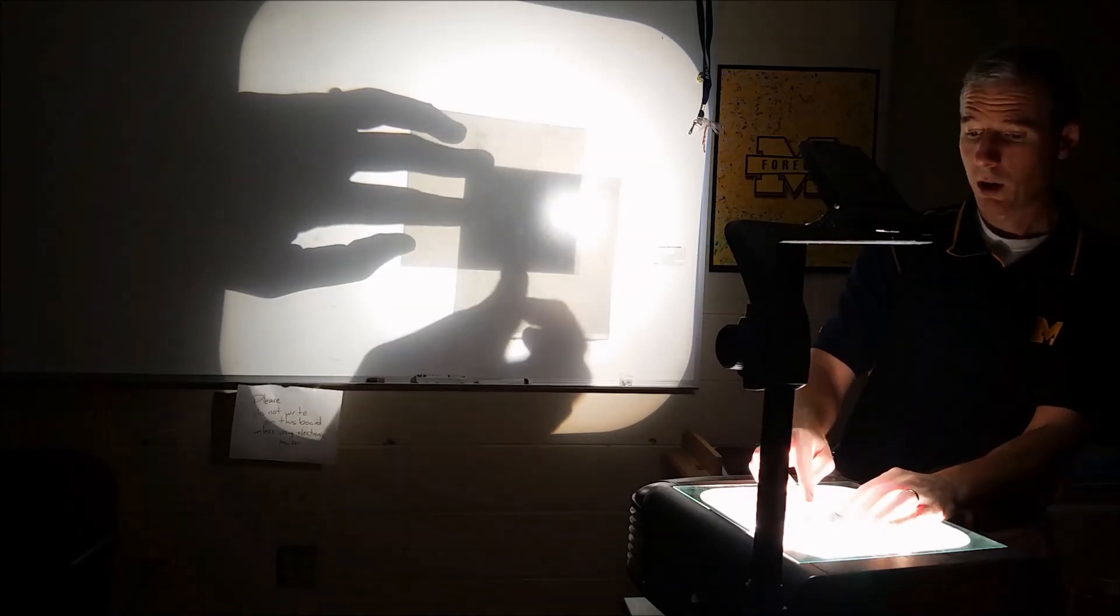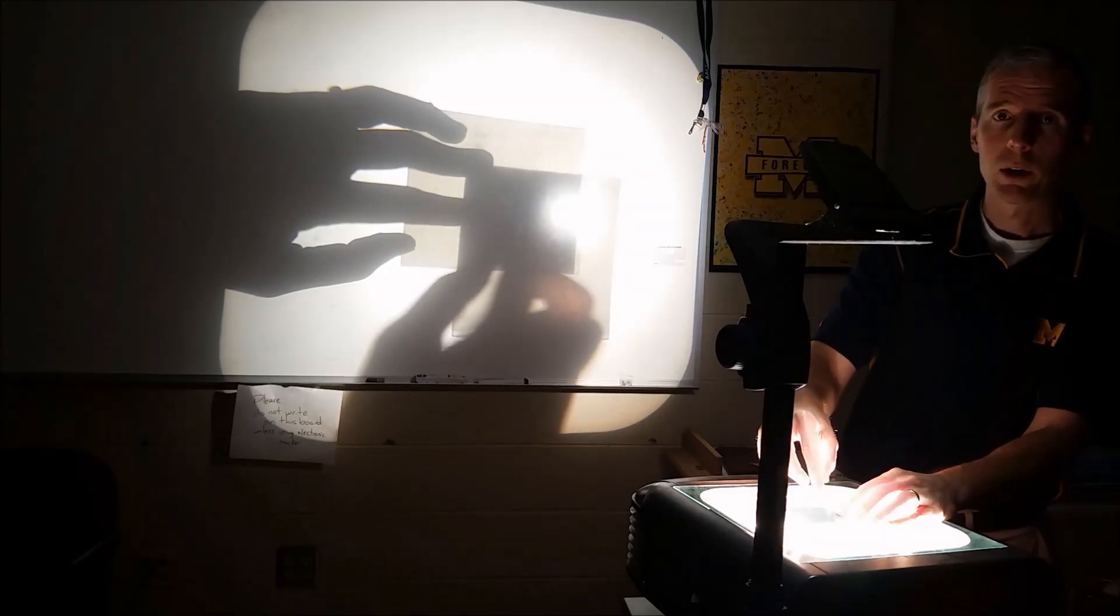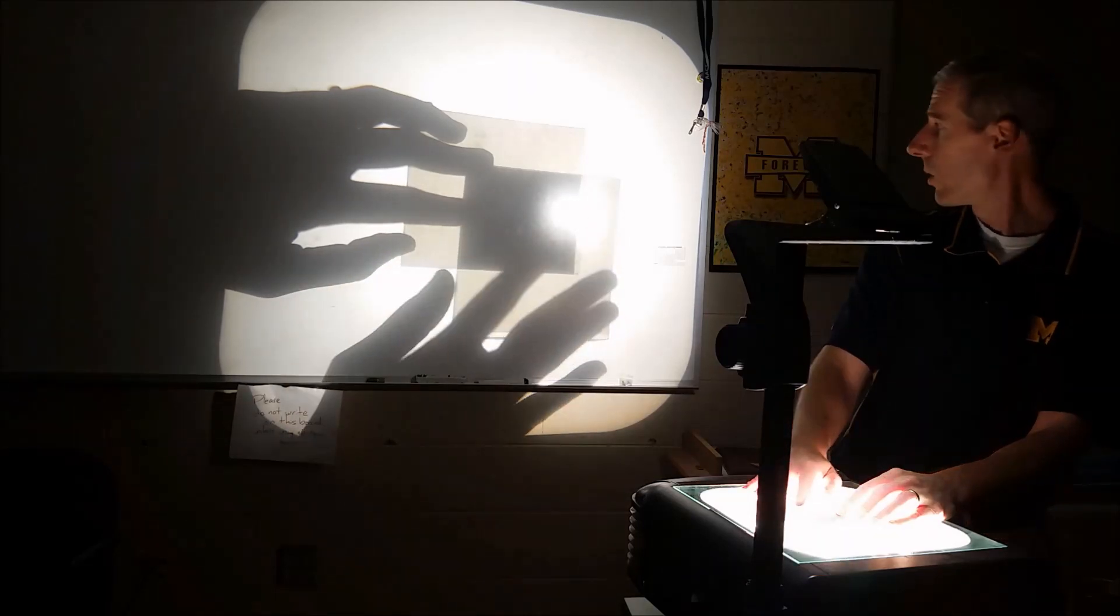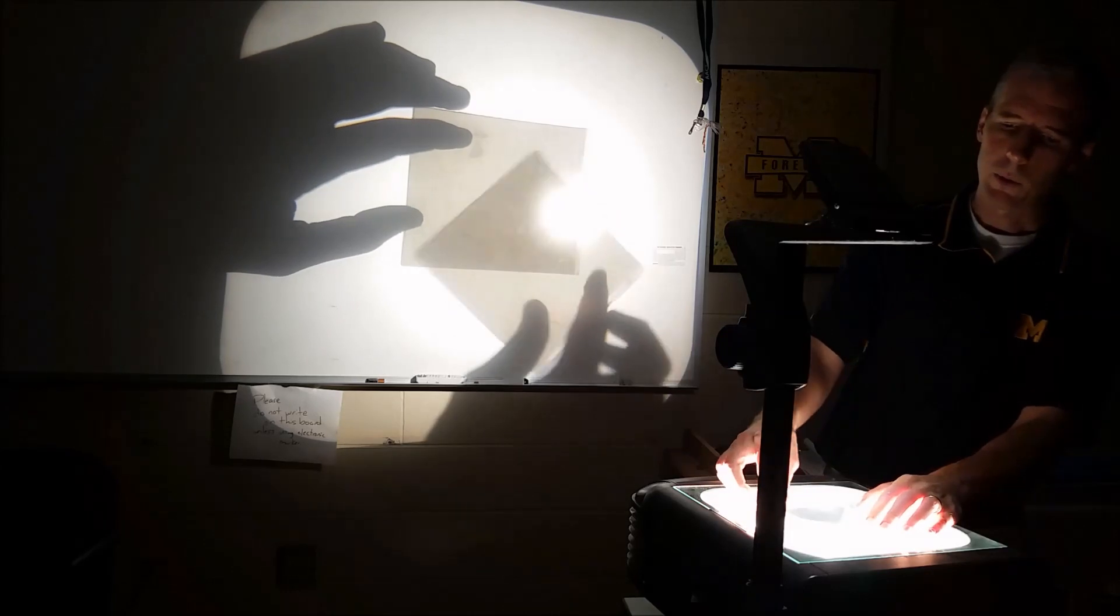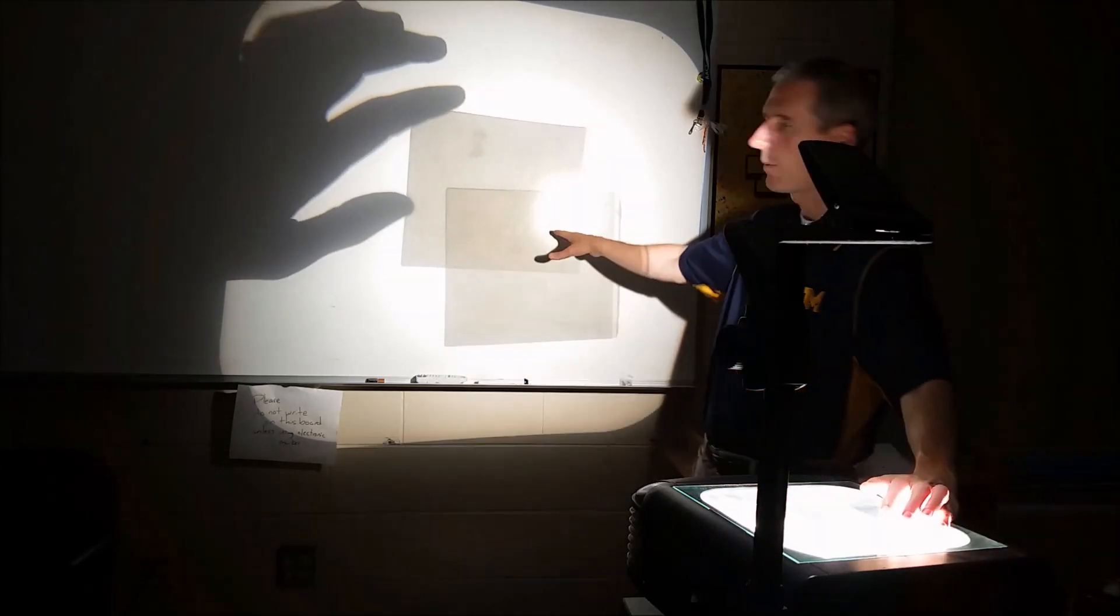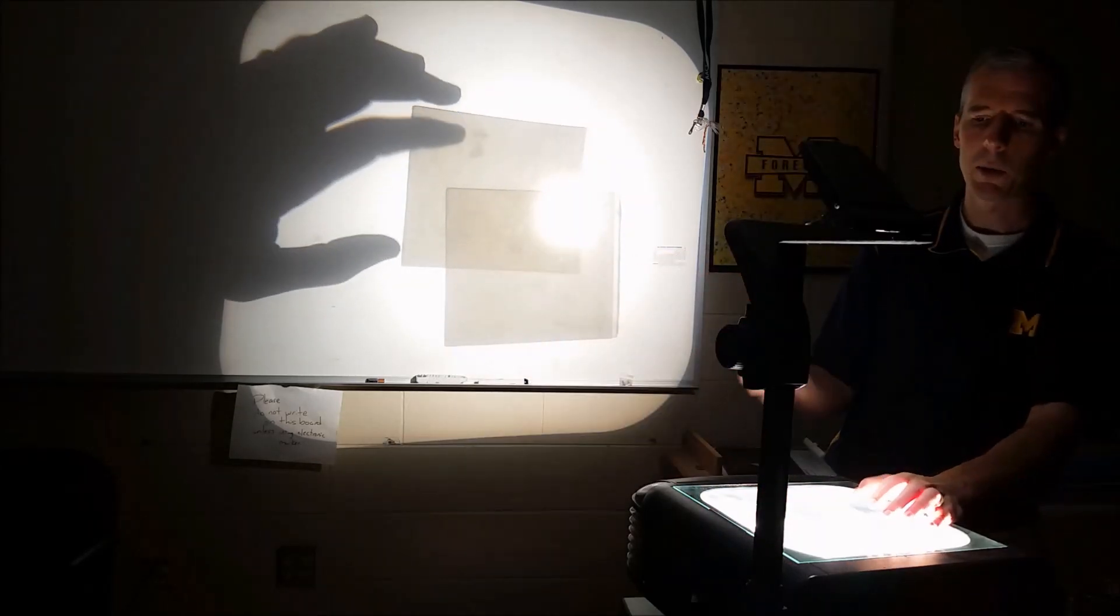So when I rotate this, one is blocking out one direction and the other is blocking out the other direction, so all the light is blocked out here in this little segment. Whereas when I rotate it back, it's just 50% of the light coming through that's being blocked.